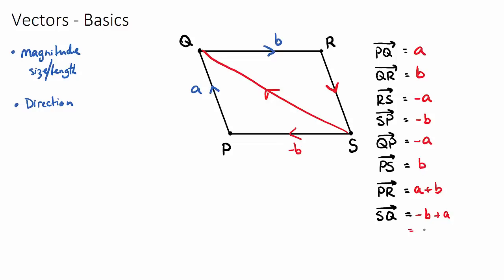Now you can write this as A minus B, because our rules for adding and subtracting vectors is just like adding and subtracting numbers, where you can move the positive one first.